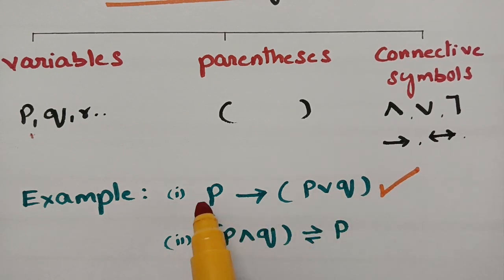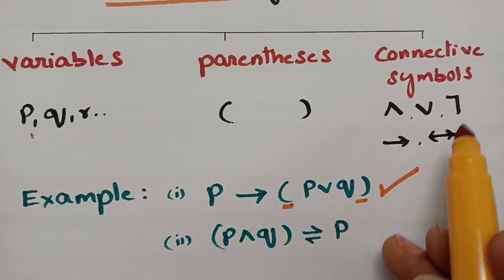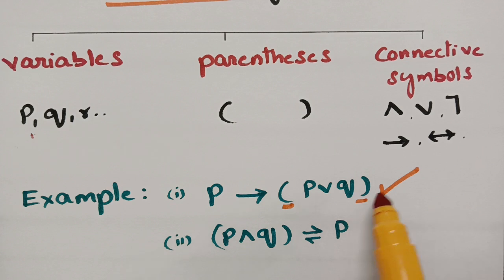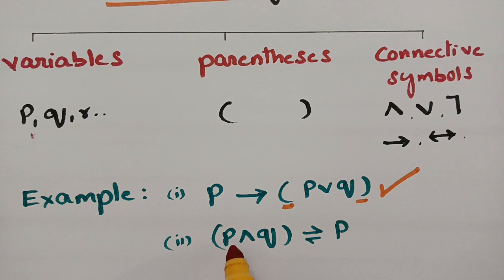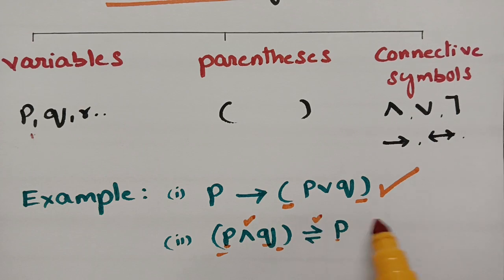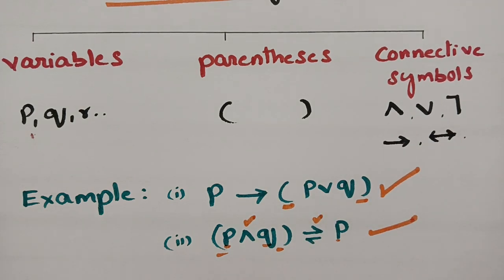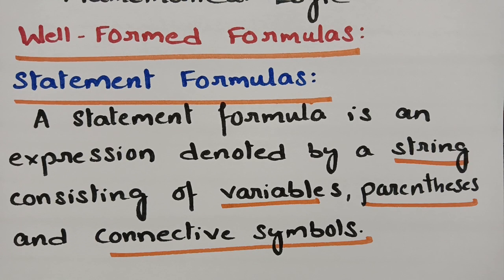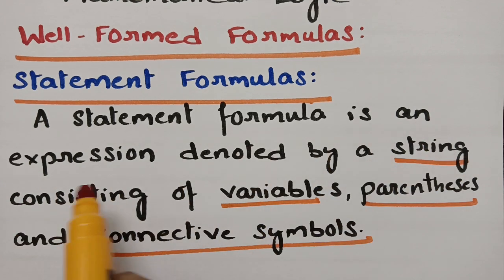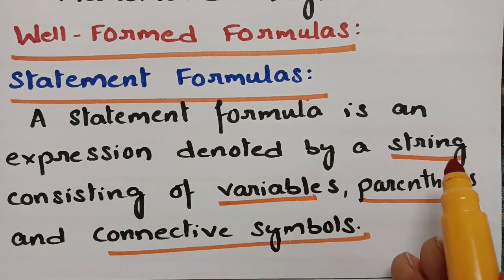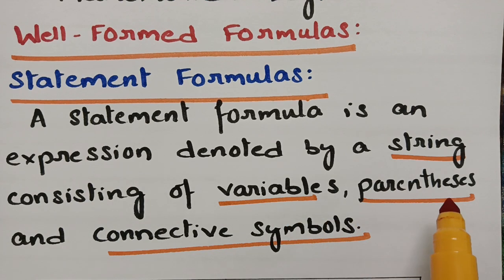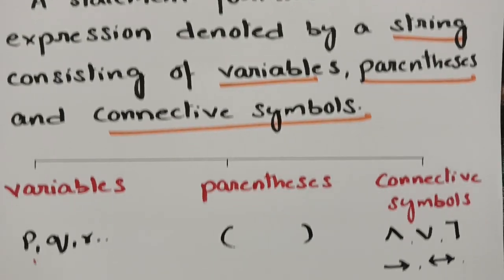It is a string consisting of variables, parenthesis, and connective symbols. The next example also has variables, parenthesis, and connectives — so that too is a complete statement formula. So for well-formed formulas, we first have to understand statement formulas: a statement formula is an expression denoted by a string consisting of variables, parenthesis, and connective symbols.